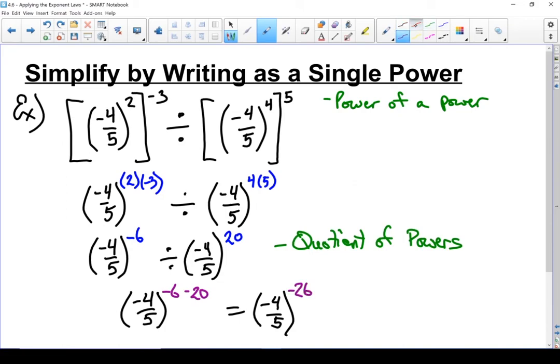And last but not least, we don't want to leave a negative exponent, so I'm going to rewrite it with a positive exponent. To deal with that negative exponent, I take the reciprocal of the base, which in this case is now negative five over four, and rewrite it with a positive: negative five-quarters to the power of 26.